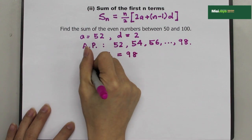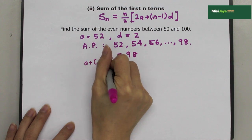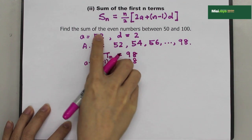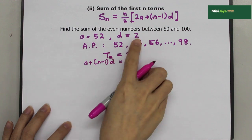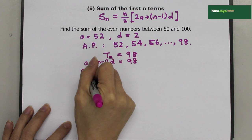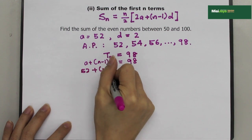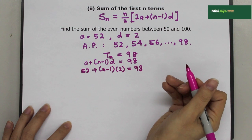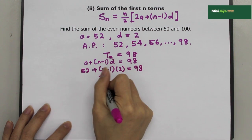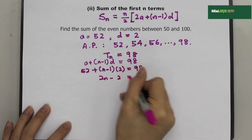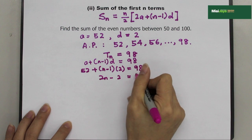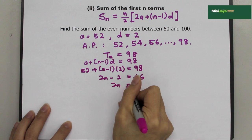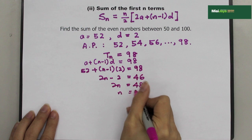TN equals A plus N minus 1 times D equals 98. Substituting A equals 52 and D equals 2: 52 plus N minus 1 times 2 equals 98. Opening the bracket gives 2N minus 2 equals 46, so 2N equals 48, therefore N is 24.